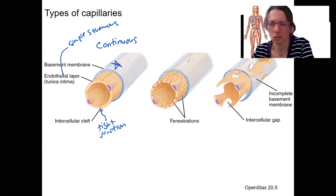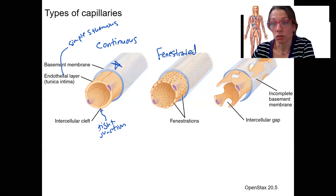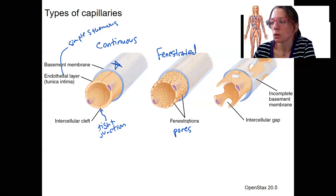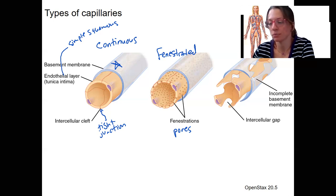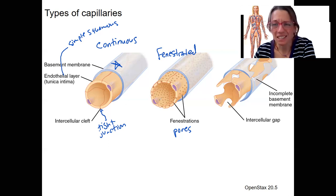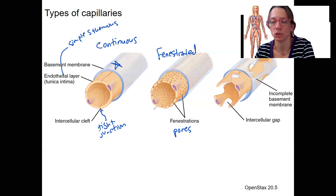The next type is called fenestrated. Fenestrations are holes — pores — that allow substances to pass through, so more rapid exchange can occur. Larger things like peptides can cross; for example, in the portal system of the pituitary gland, these exist to allow hypothalamic releasing hormones to reach the anterior pituitary. They're also present in the small intestine for nutrient absorption and in the kidney, where we'll see their role in kidney filtration and filtrate formation. So these are more permeable.